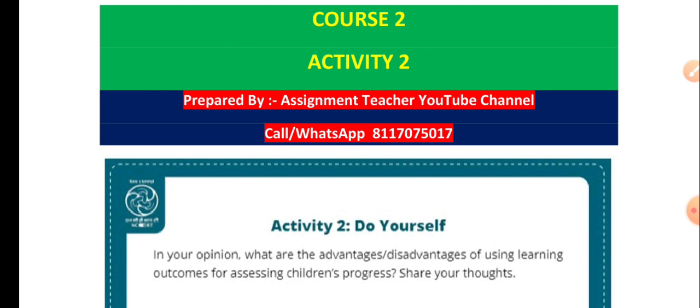Among Module Two's activities, two are important — Activity Two and Activity Four. In Course One there are also five or six activities, among which Activity Two, Activity Five, and Activity Six are important, which I have already completed and you have already gone through the PDF and video.